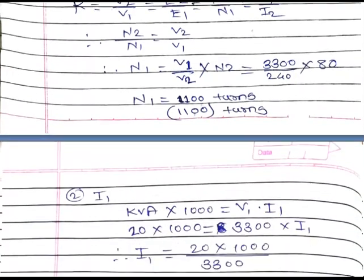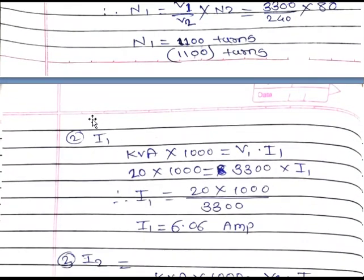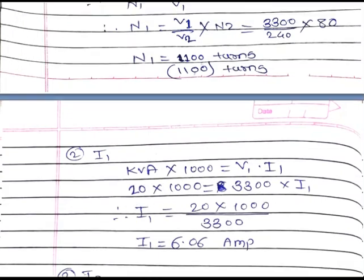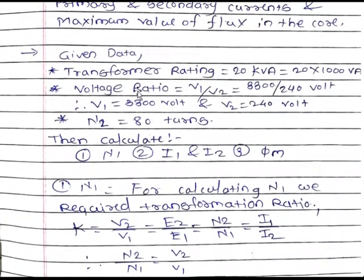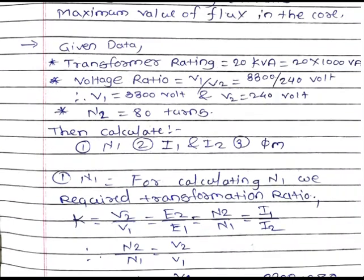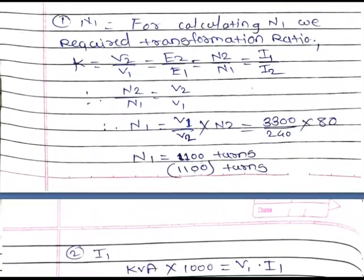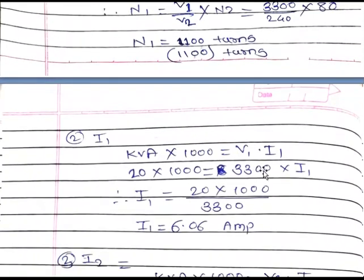Now we calculate the value of current I1. For calculation of I1 we use the formula of KVA. KVA is equal to V1 into I1, or KVA is equal to V2 into I2. Since we calculate the value of I1, we consider KVA equal to V1 into I1. The KVA rating is 20 KVA as given in the example, and the value of V1 is 3300 volts.